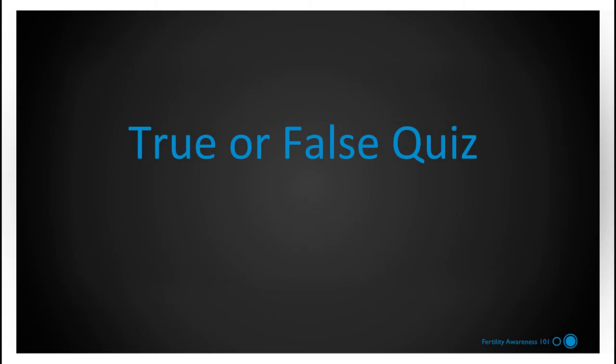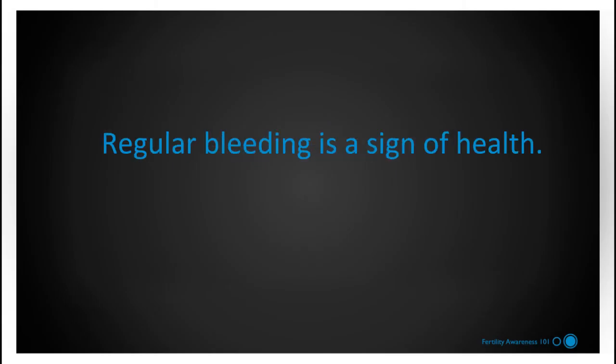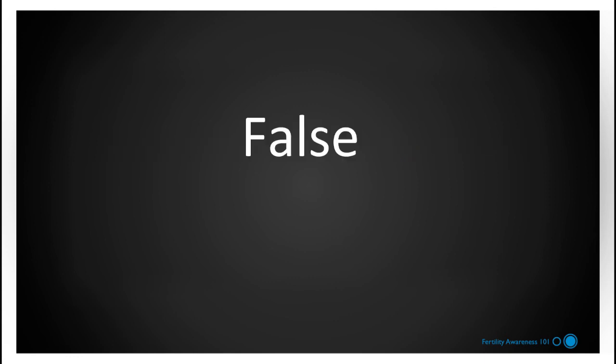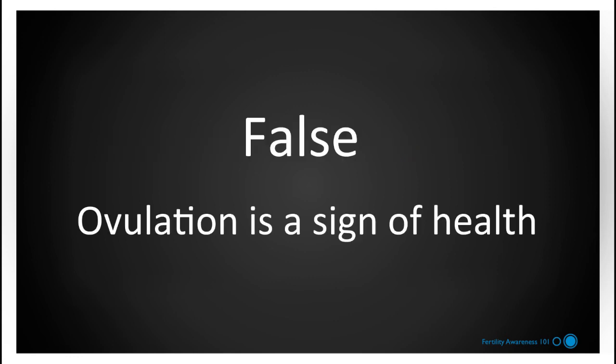Here's a little quiz to see if you're retaining the information. True or false: Regular bleeding is a sign of health. The answer is false — ovulation is a sign of health. A woman can actually bleed very regularly, but if she is not ovulating, there is an underlying medical reason.